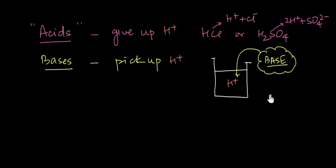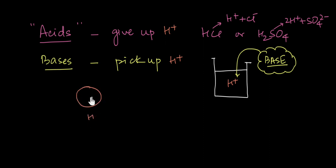Now that we understand what a base is, let's figure out what kinds of compounds can act as a base. Let's start by asking: what exactly is an H+ ion? An H+ is simply a hydrogen atom — which has one proton and one electron — with that electron removed. So an H+ is simply a hydrogen atom without an electron.